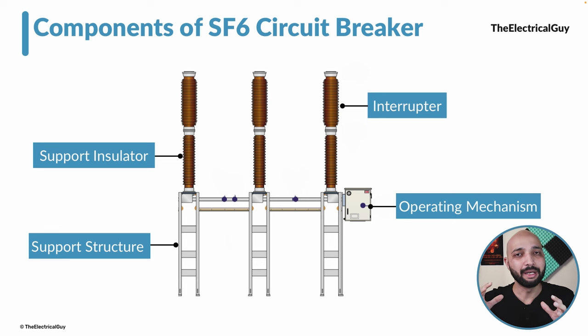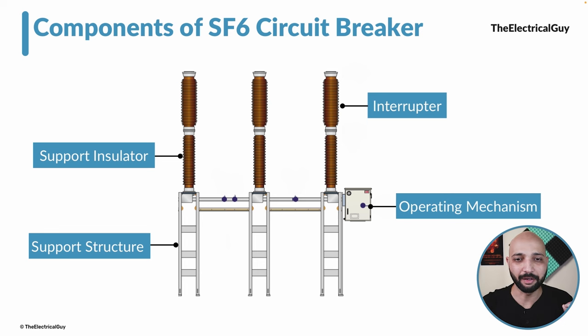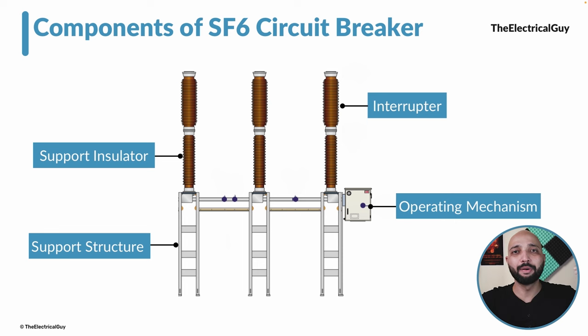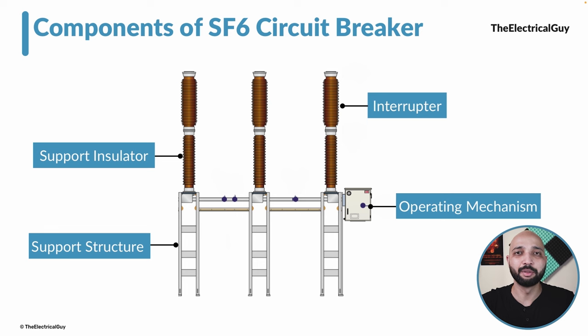In order to make and break currents, the circuit breaker needs something that will interrupt the current — that is the interrupter. To support the insulator and maintain sufficient clearances, we need a support insulator. To open and close the contacts, we need a mechanism — the operating mechanism. And to maintain the complete structure steadily, we also need a support structure. These are the main components of the SF6 circuit breaker.